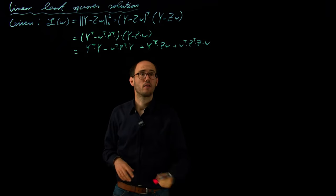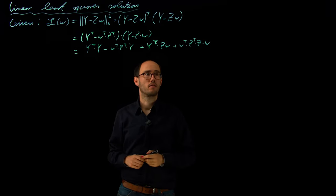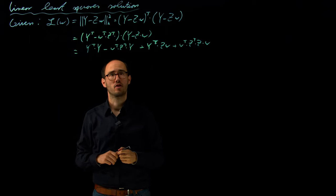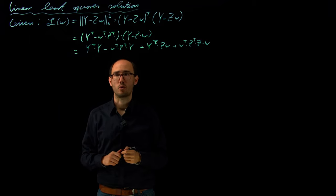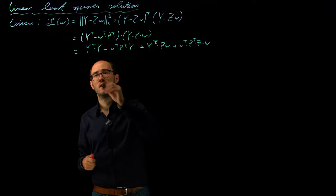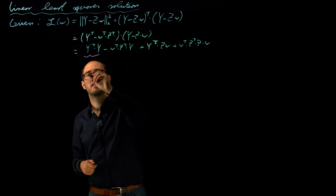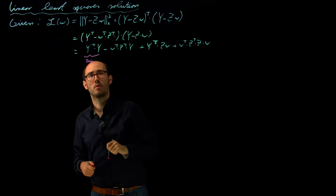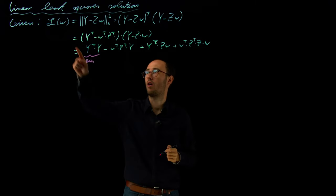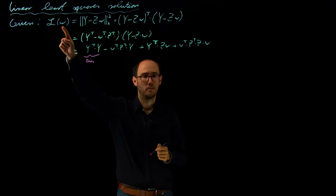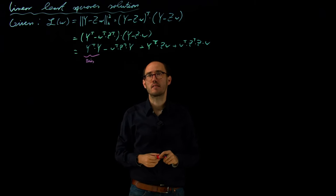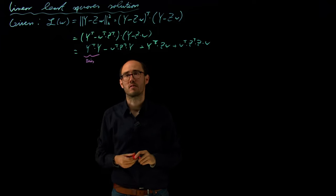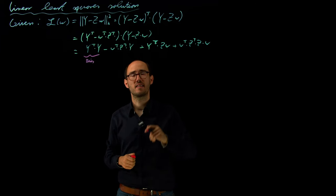If we have a look at this multiplied or expanded cost function we can basically identify three different types of terms. The first term we see is basically a bias or an offset: y transpose times y, which is independent of our parameter vector w, so that seems to be unrelated to it or not optimizable in that sense.